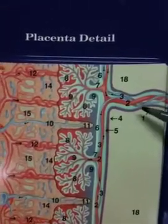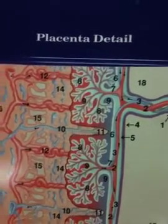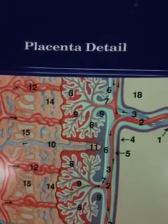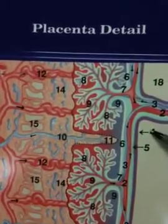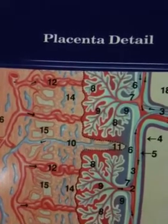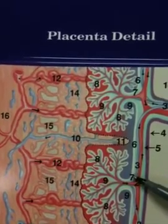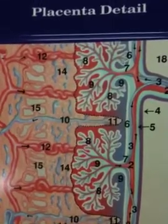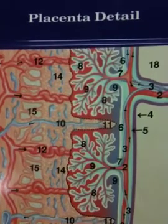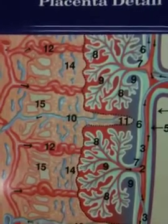Now we move to the placental detail. We have the umbilical cord, the umbilical vein, and the umbilical arteries — the arteries are blue and the vein is red. Three is the umbilical arteries. Four, amnion. Chorionic plate. Chorion. Cytotrophoblast. Villous stem containing fetal arterial and venule.